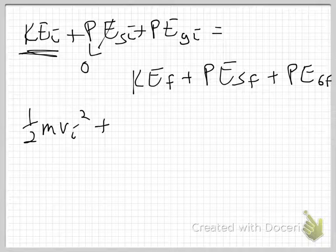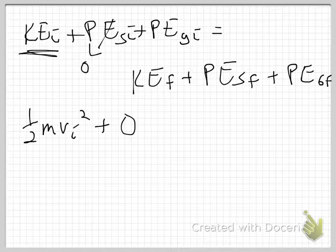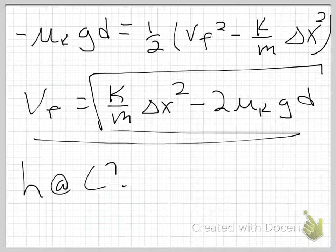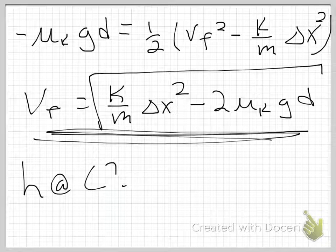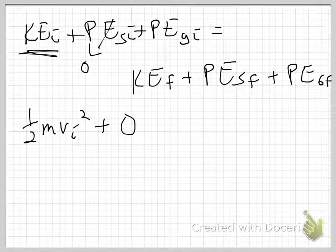So, I just get, for my initial energy, I just have, it's all kinetic. I have one half mv initial squared. And what is that v initial? Well, that's the v final from the last part of the problem. It's this big, ugly, radical thing. But that's what I found is my velocity going into the ramp. And so, in my next part of the problem, that becomes my v initial.